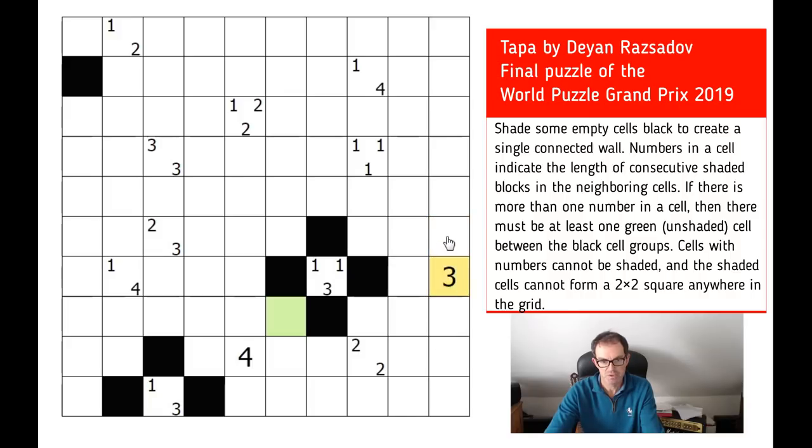Once you know that this square is green, you know that there cannot be another green square next to this square. Both of these squares are black. And in fact, because these are all odd digits, both of those squares are also forced to be black.